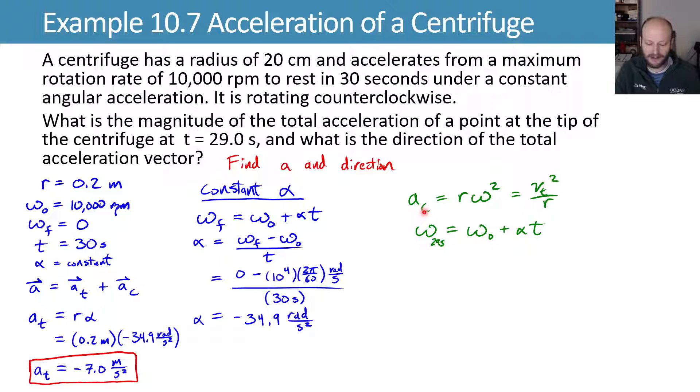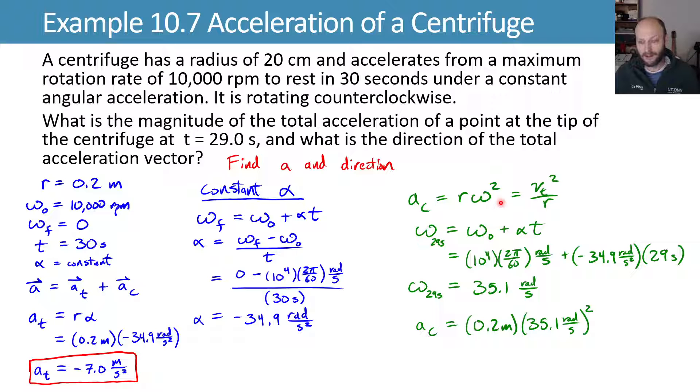Why didn't we need to consider the 29 seconds here? That's because our angular acceleration is constant, which means that my tangential component that's related to that angular acceleration is also a constant. Here though, because this centripetal acceleration depends on how fast we're spinning at any given point in time, we need to know how fast we're actually spinning at this point in time. We'll find this by plugging in our values, doing whatever unit conversions we need to make things work. And then we get an angular velocity at 29 seconds of 35.1 radians per second.